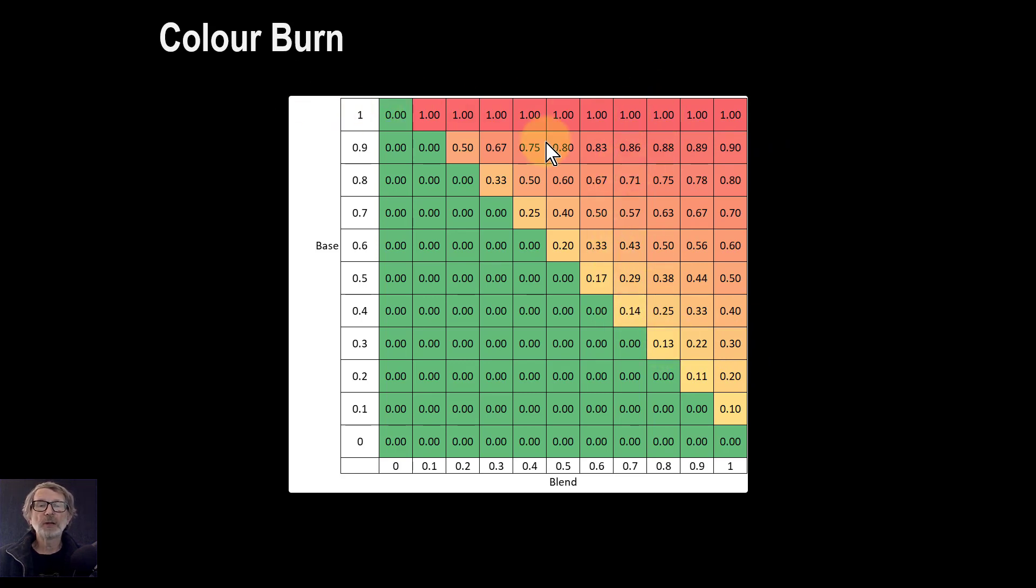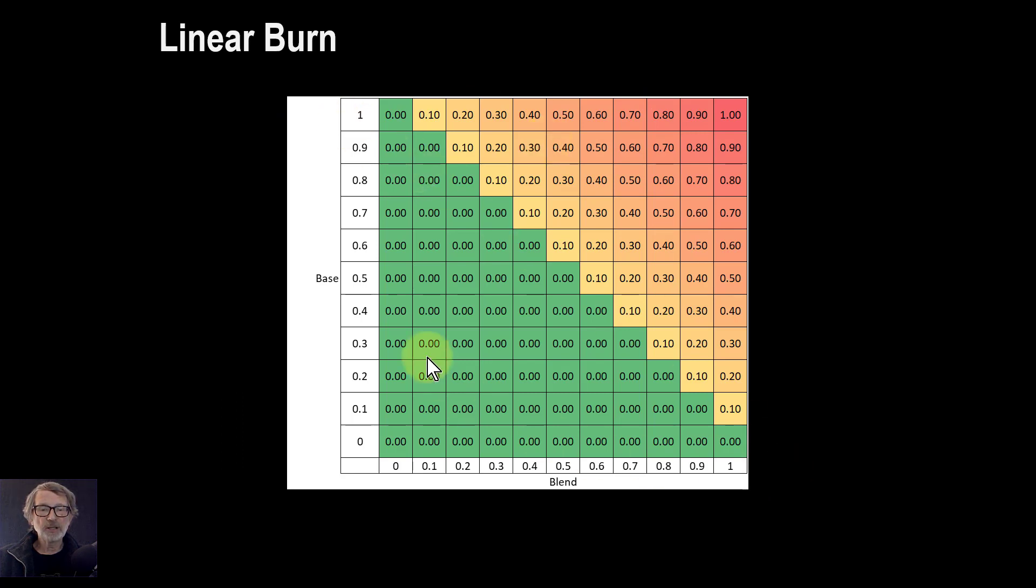However, when you go to linear burn, you get a very similar triangle here to colour burn. But the progression up here is now linear. It's not that non-linear effect. And the only place you get the whites combined to get white is when they're both white. So you don't get the white preservation as you got with colour burn.